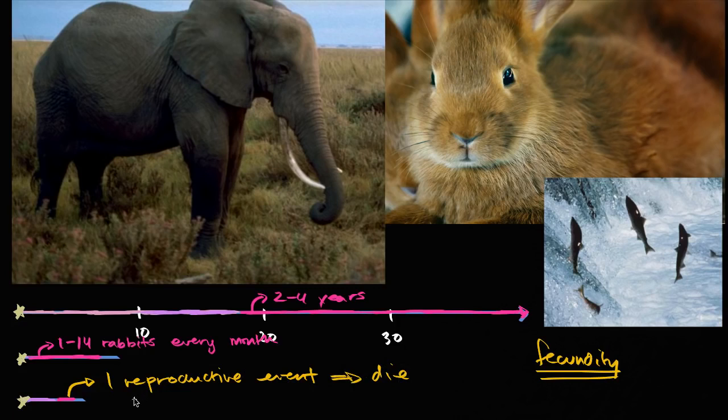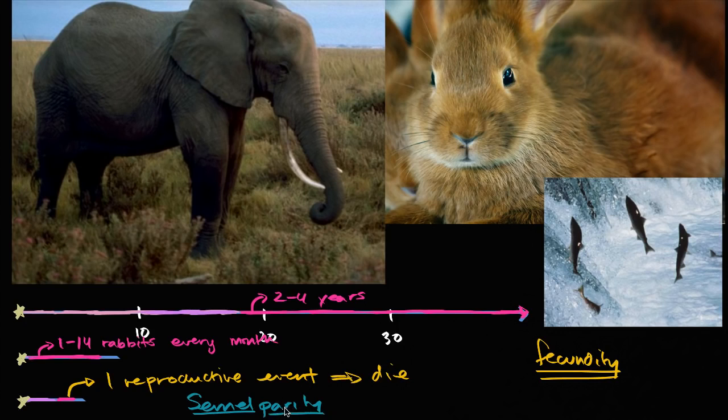So they have one reproductive event, and then death. And people are still understanding why exactly this happens. There's actually a technical term for species that do this. The salmon isn't the only one, where they have that one reproductive event where they might have hundreds or even thousands of eggs, but then they die. This is called semelparity.